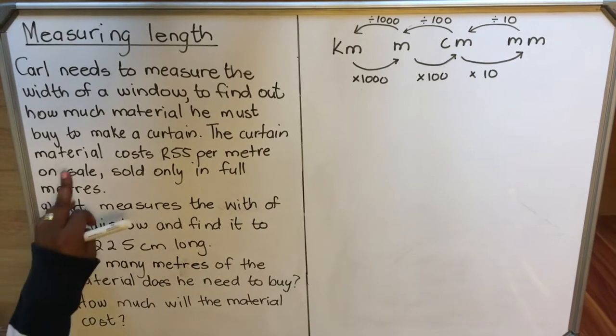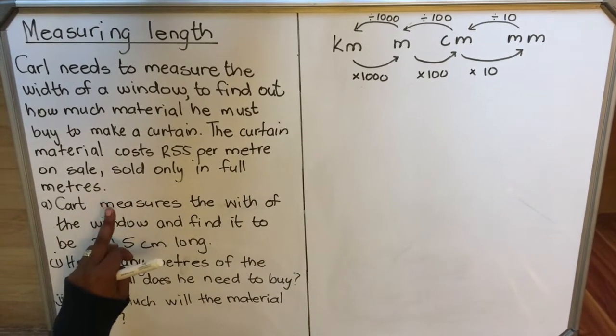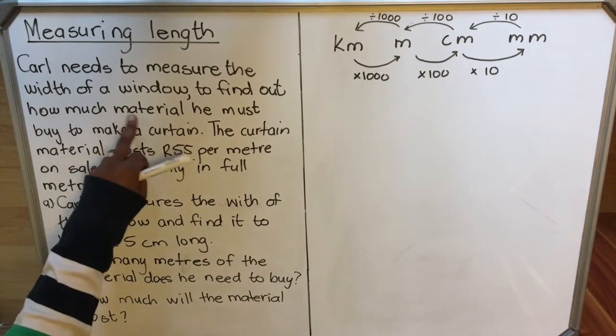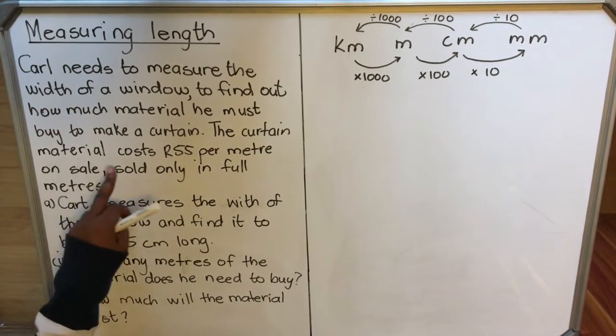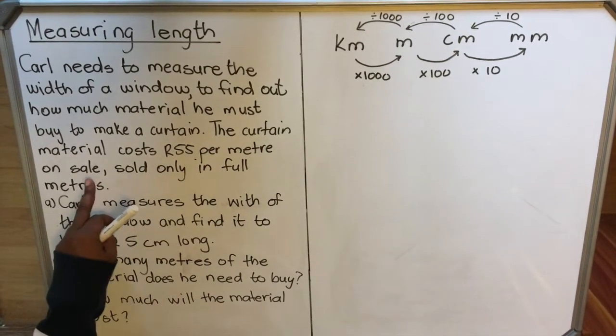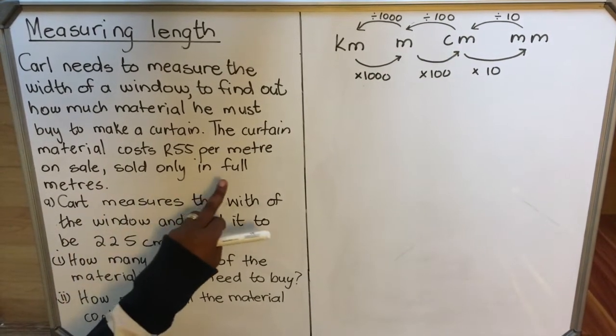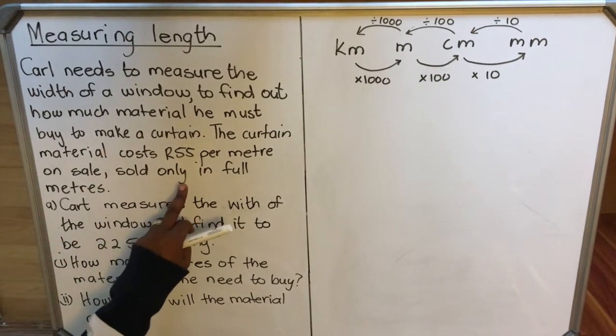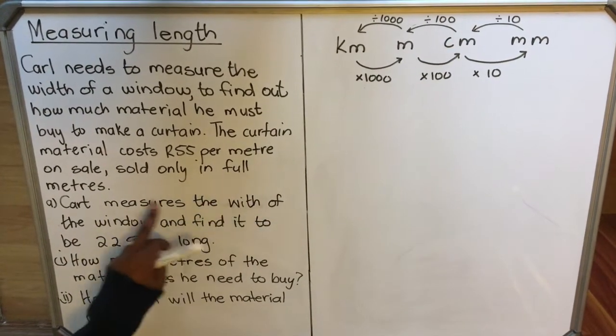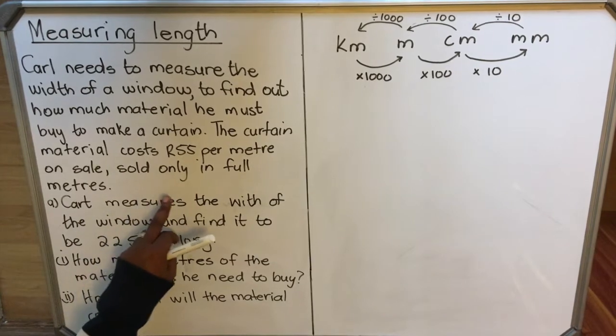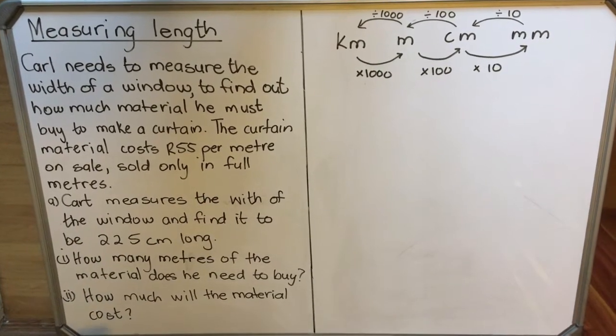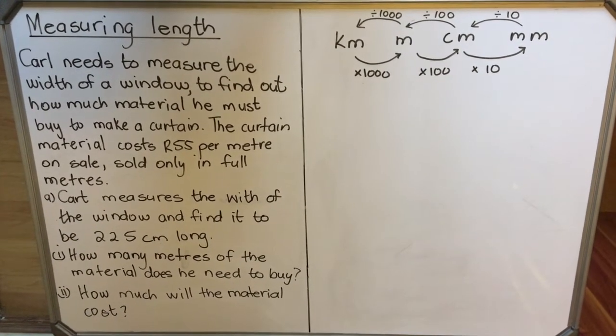Carl needs to measure the width of a window to find out how much material he must buy to make a curtain. The curtain material costs $55 per meter on sale, sold only in full meters. You can't buy half a meter, you have to buy full meters.